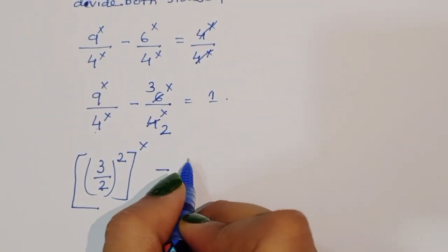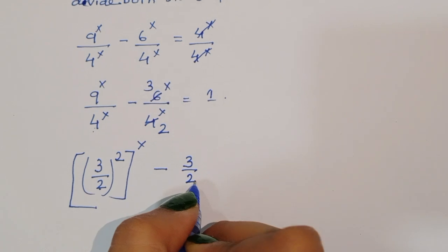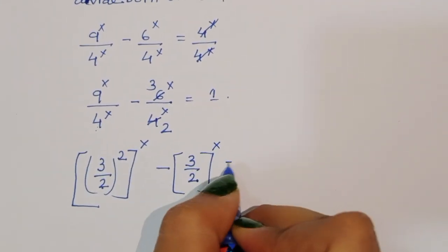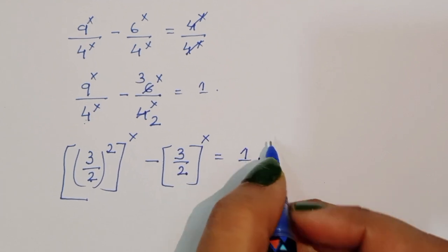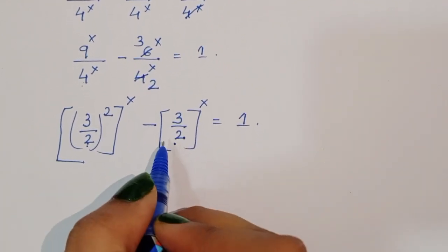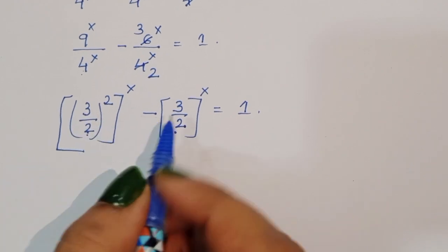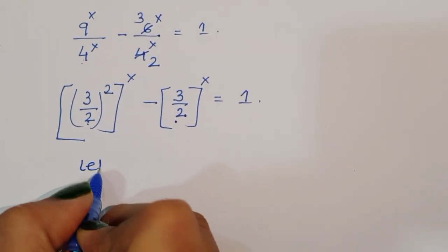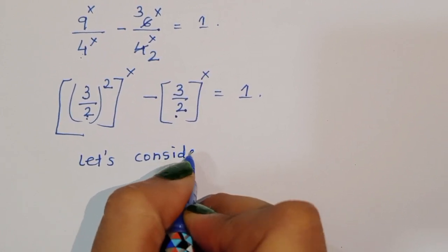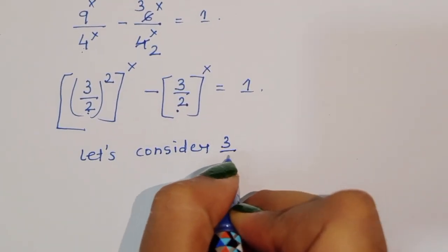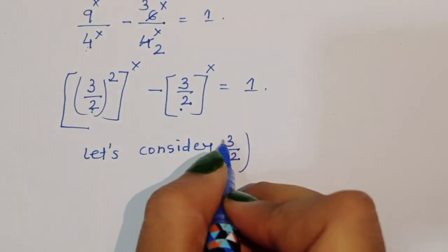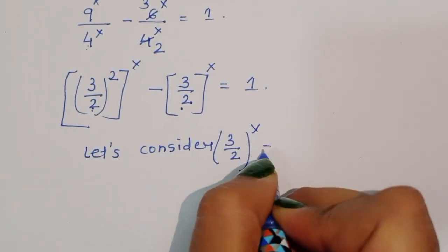We can write this as (3/2)^x. Now both terms have base 3/2, so let's consider 3/2 power x. Let a = (3/2)^x, because the power is the same.